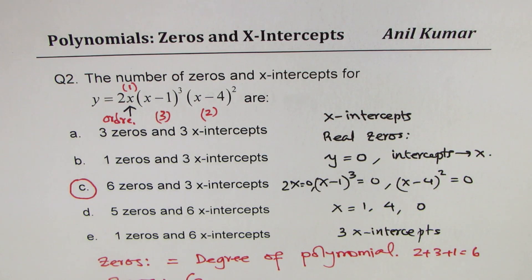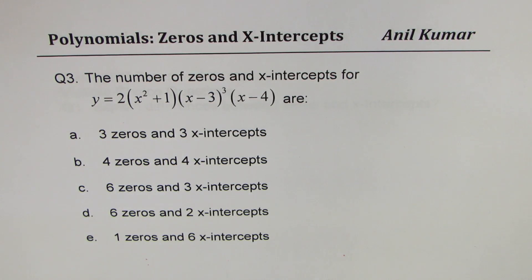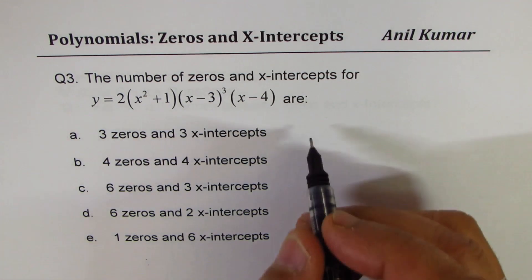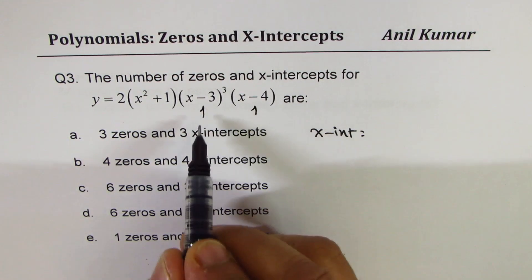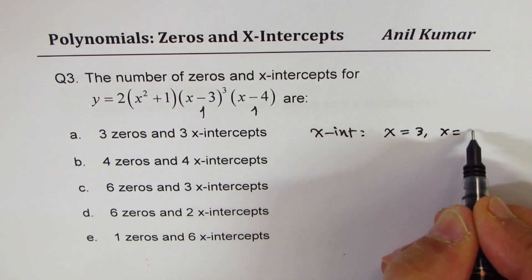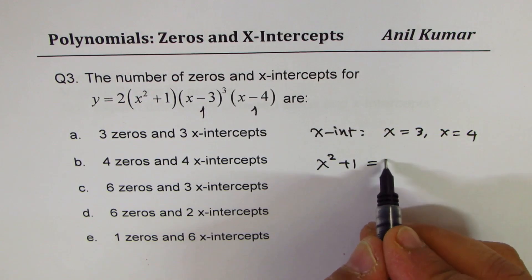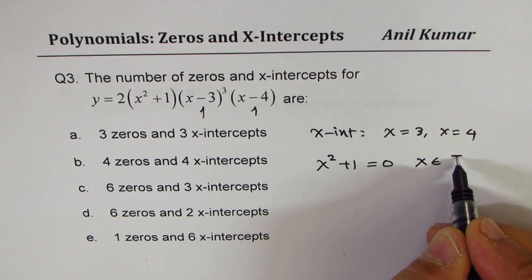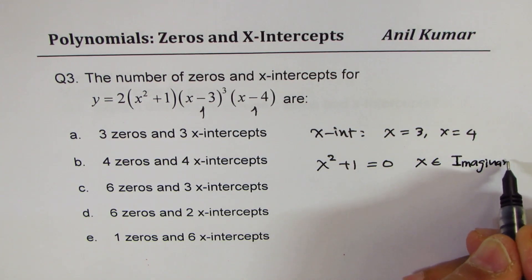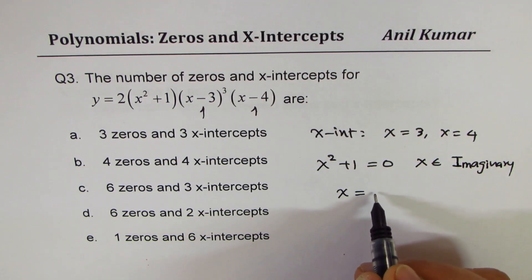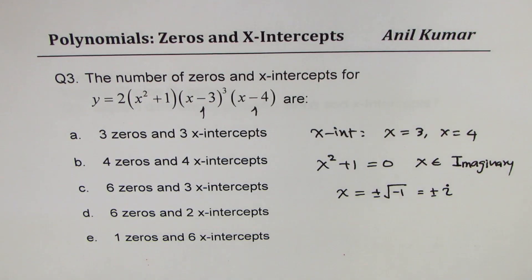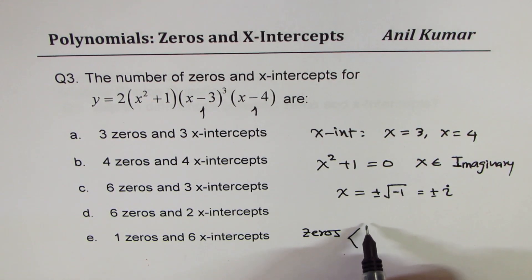Now here is the test question — pause the video, copy and answer. For x-intercepts, there are only two: one at x = 3 and the other at x = 4. The factor x² + 1 will not give any x-intercept since x² + 1 = 0 only when x equals plus or minus the square root of negative one, which is plus or minus i — imaginary numbers, not real. This clearly shows that zeros could be imaginary.